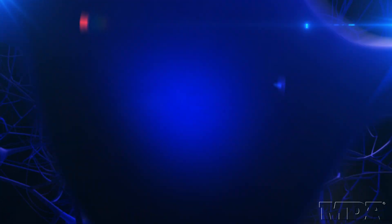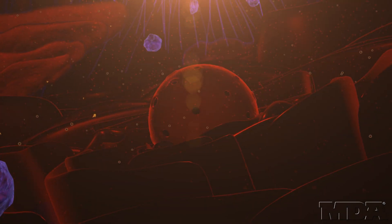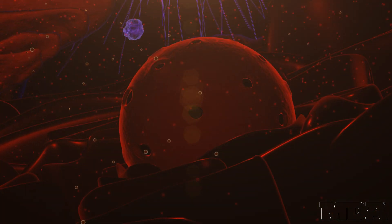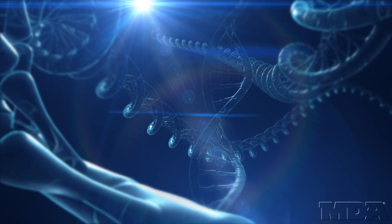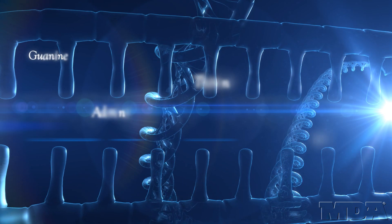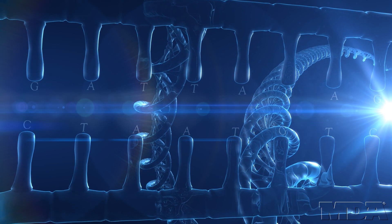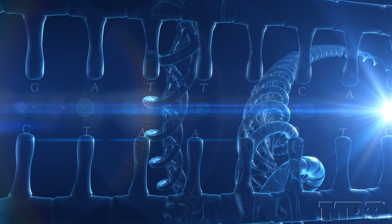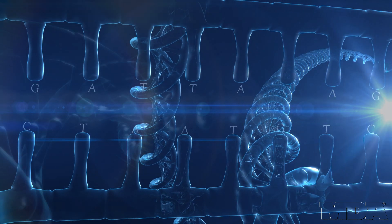One way to eliminate or reduce SOD1 from the body could be to intercept and destroy the genetic instructions that the body uses to make that protein. These instructions, called messenger RNA or mRNA, are copied directly from the DNA found in every cell. DNA is that familiar double helix shaped like a twisted ladder. The rungs of the ladder are made of four different types of chemical letters, which make up the code of life. The order of the chemicals in the SOD1 gene dictates the unique instructions the body uses to make the SOD1 protein.